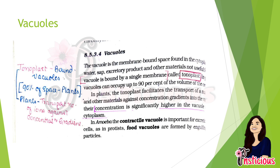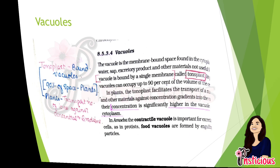In plants, vacuoles transport a number of ions against the concentration gradient, and they occupy about 90 percent of the space in plant cells — they are mainly bound by the tonoplast. The concentration of solutes is significantly higher in the vacuole than in the cytoplasm. In amoeba, the contractile vacuole is important for excretion, and food vacuoles are formed after engulfing food particles.